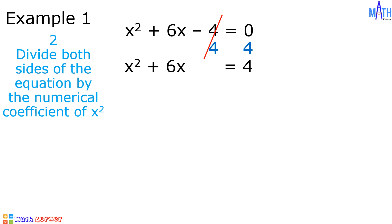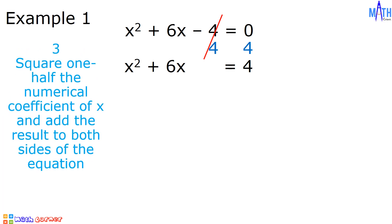Step number 2: divide both sides of the equation by the numerical coefficient of x squared. Since the numerical coefficient of x squared is equal to 1, there is no need to divide. Step number 3: square one-half the numerical coefficient of x and add the result to both sides of the equation. The numerical coefficient of x is equal to 6; one-half of 6, or 6 divided by 2, is equal to 3; and 3 squared is equal to 9. Let us add 9 to both sides of the equation.